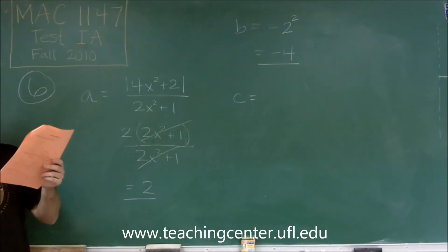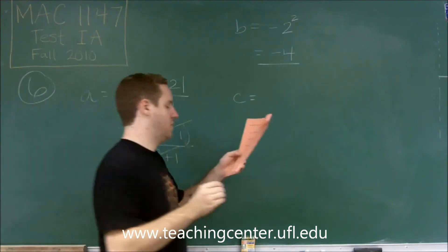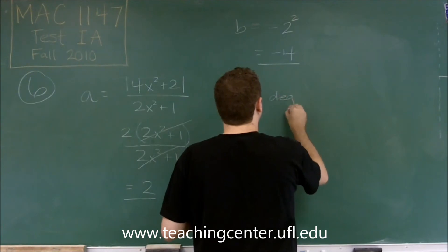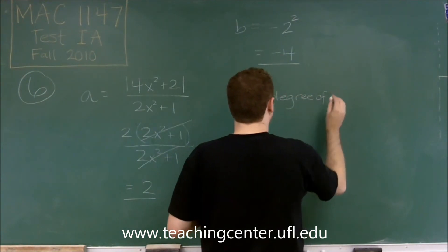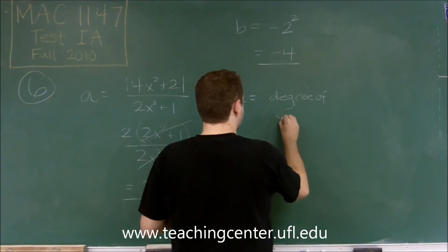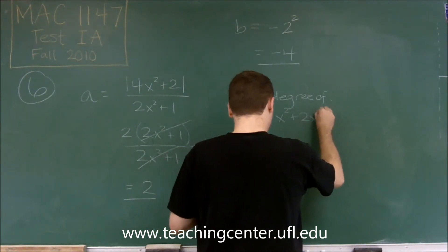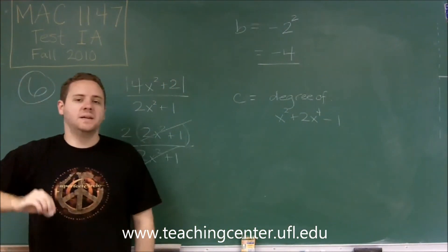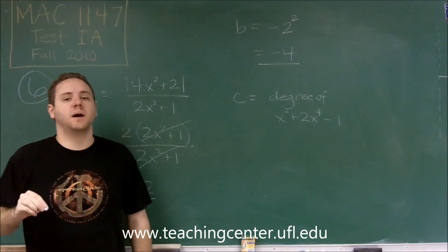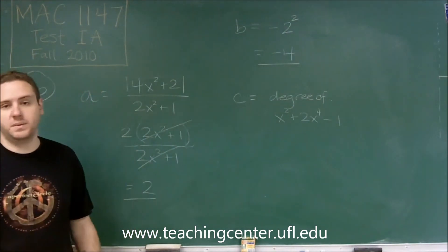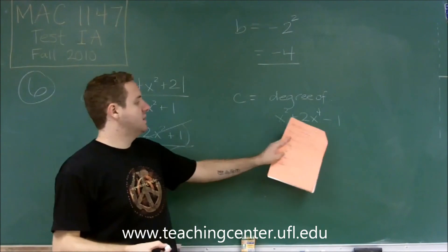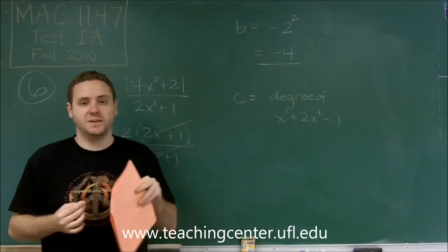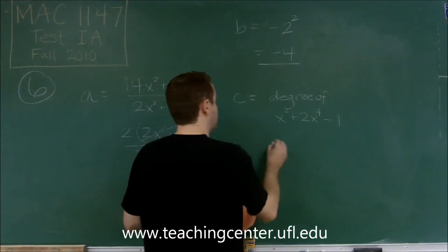And for C, we have the degree of the polynomial x squared plus 2x to the 4th minus 1. So remember that the degree of a polynomial is the value of its highest power of x or the variable. It might not be of x. In this case, don't get confused by if it's written out of order. However, the highest power of x here is 4. So that's the degree of this polynomial. So we get 4.